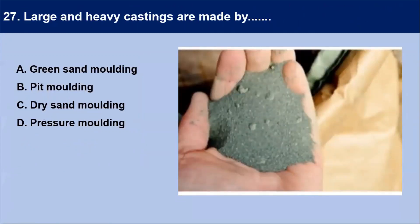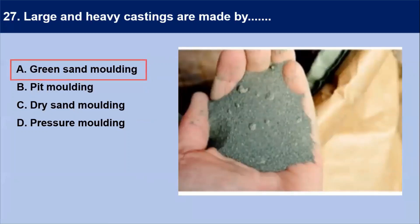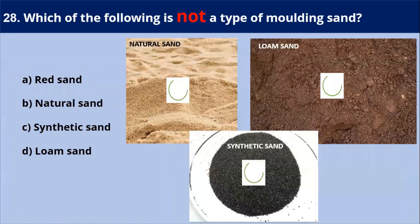Next question: large and heavy castings are made by — the answer is green sand molding. This method is referred to as 'green' since the sand is recyclable and there are no chemical additives — just clay, water, and sand. The green sand after water is mixed must have adequate strength and plasticity for making and handling the mold. Large and heavy castings are made by green sand molding.